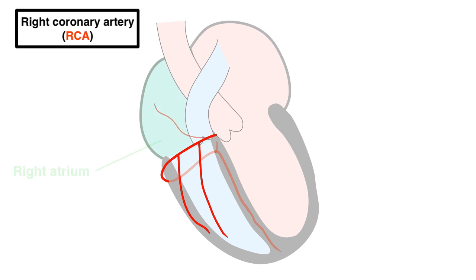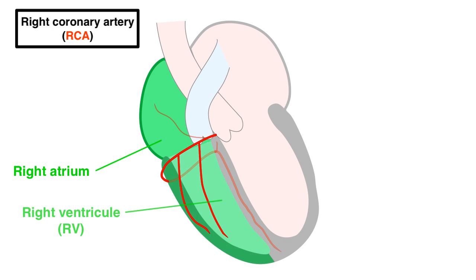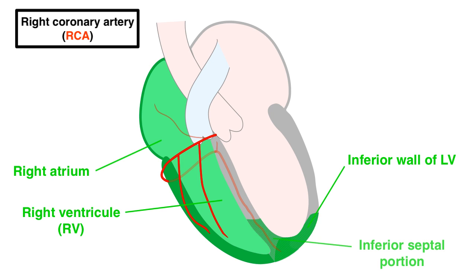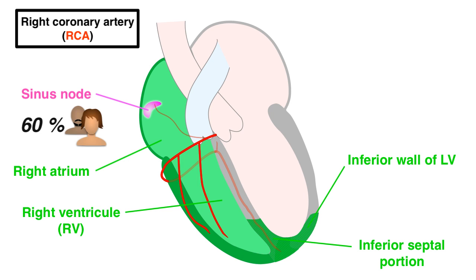The RCA supplies the right atrium, most of the right ventricle, the inferior wall of the left ventricle, and the inferior portion of the interventricular septum. It also supplies the sinus node artery in about 60% of people and the AV node artery in most people.